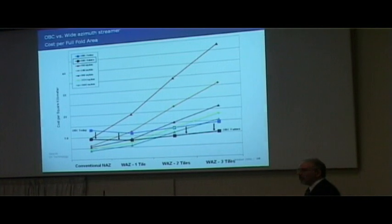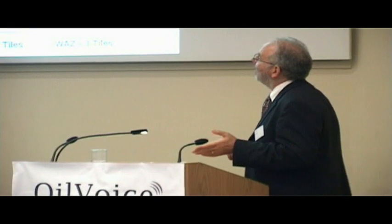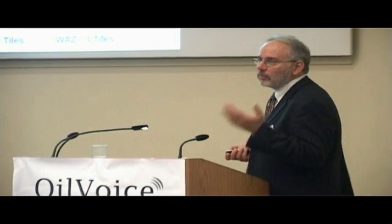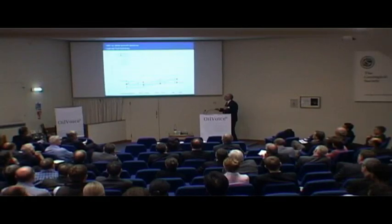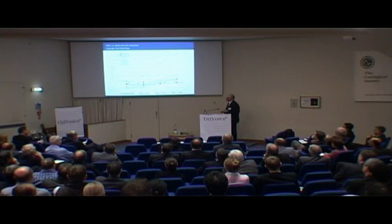What we see in the future is that OBC costs are going to come down further as the technology improves. Just as PGS putting more streamers out was able to reduce the square kilometer rate by generating more square kilometers per pass of the vessel, with larger and larger OBC spreads — which is the kind of thing that node-based technology allows — we are actually going to be more competitive for some of these wide-azimuth geometries, even without factoring in the logistical access problems for streamer solutions.